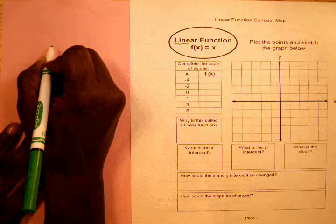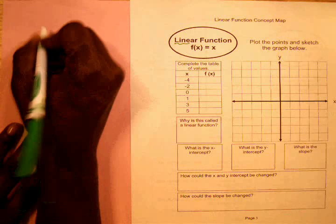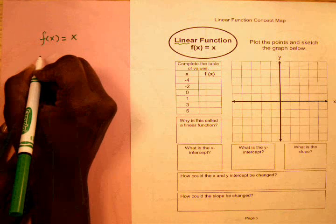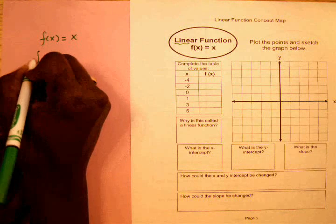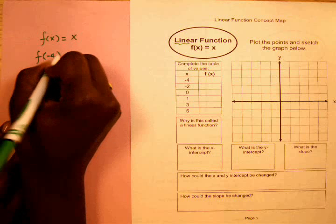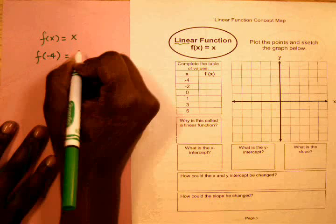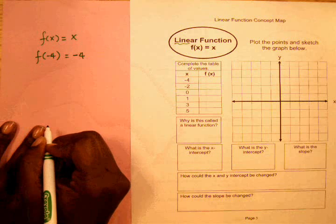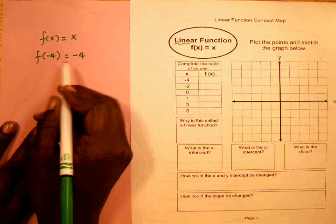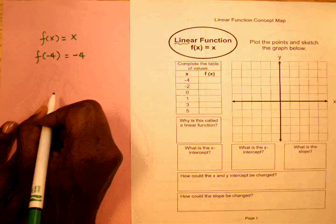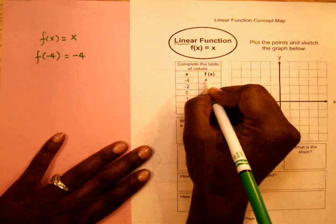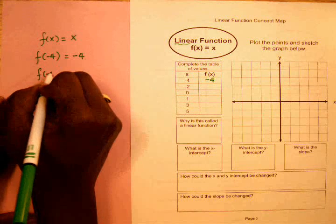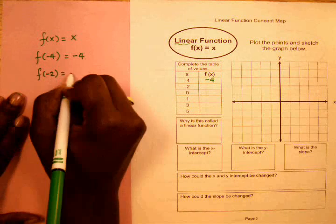So if f(x) equals x, when I substitute for x, f of negative 4 equals negative 4. In this case, the rule states that f(x) and x are the same, they're equal. So I fill in my table and I use the rule for the rest of my input values.